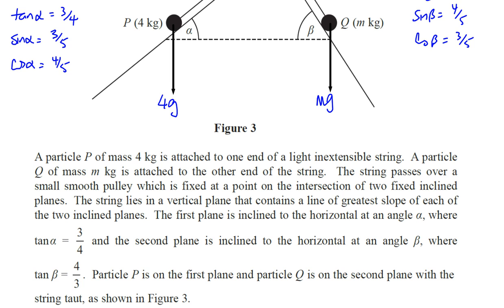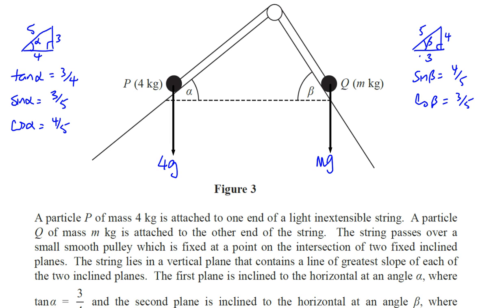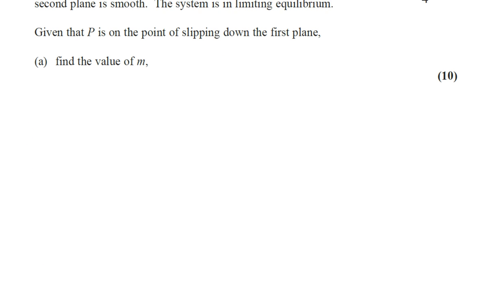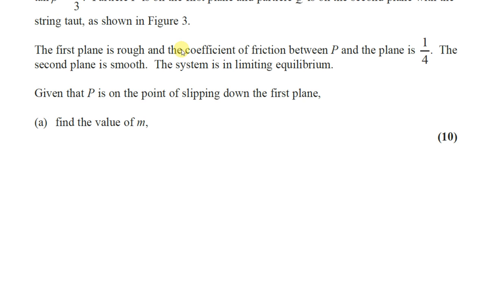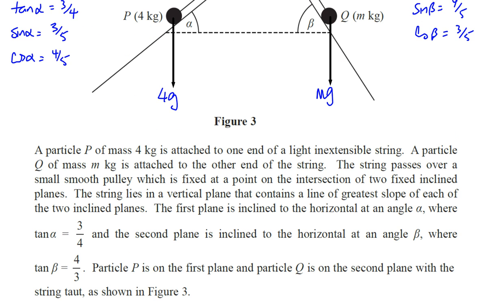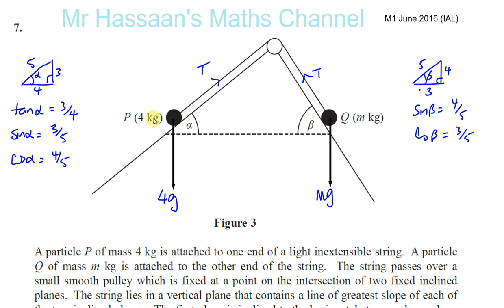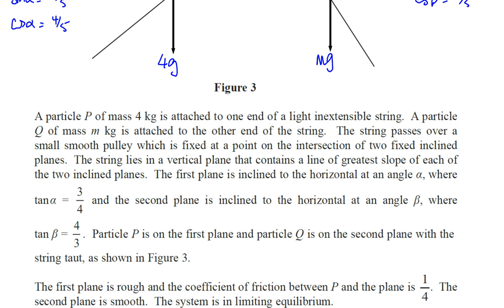The string is taut, meaning there's tension in it. Because it's one inextensible string, the tension is the same in both parts. The first plane is rough with coefficient of friction mu equal to a quarter, and the second plane is smooth. The system is in limiting equilibrium — it's just about to move — and P is on the point of slipping down the first plane. Find the value of M.